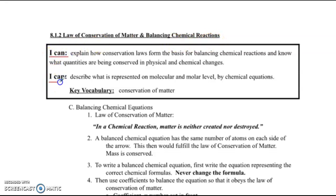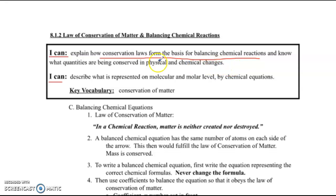Here are our two ICANN statements for this video. At the end of this video, you will be able to explain how conservation laws form the basis for balancing chemical reactions and how you know what quantities are being conserved in physical and chemical changes. Your second ICANN statement is: you can describe what is represented on a molecular and molar level by chemical equations.